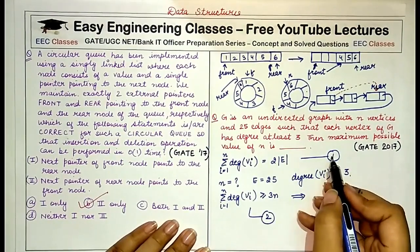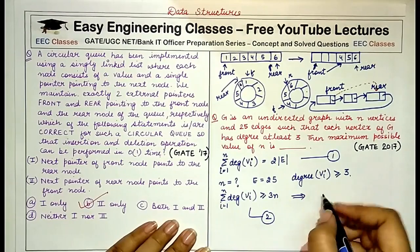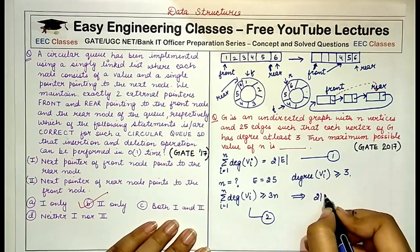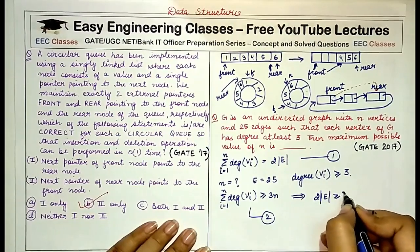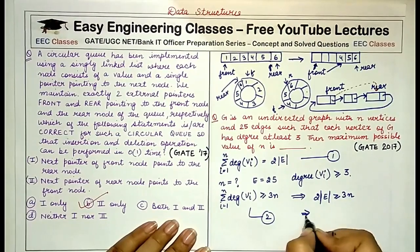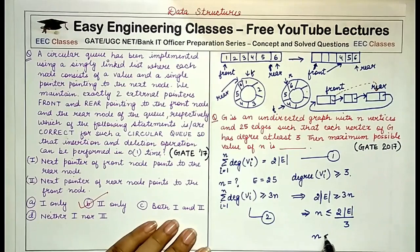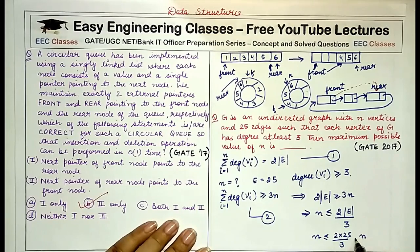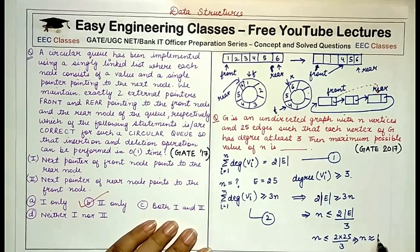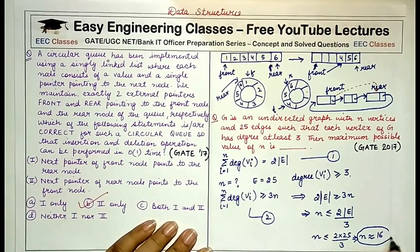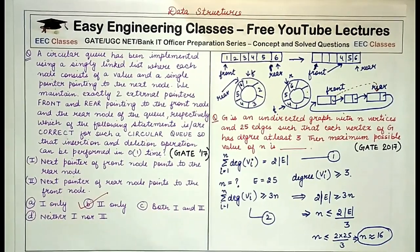Equating the two expressions: 2e ≥ 3n, which gives n ≤ 2e/3. So n ≤ 2 × 25 / 3 = 50/3, which is approximately 16. Therefore the maximum possible value of n is 16.